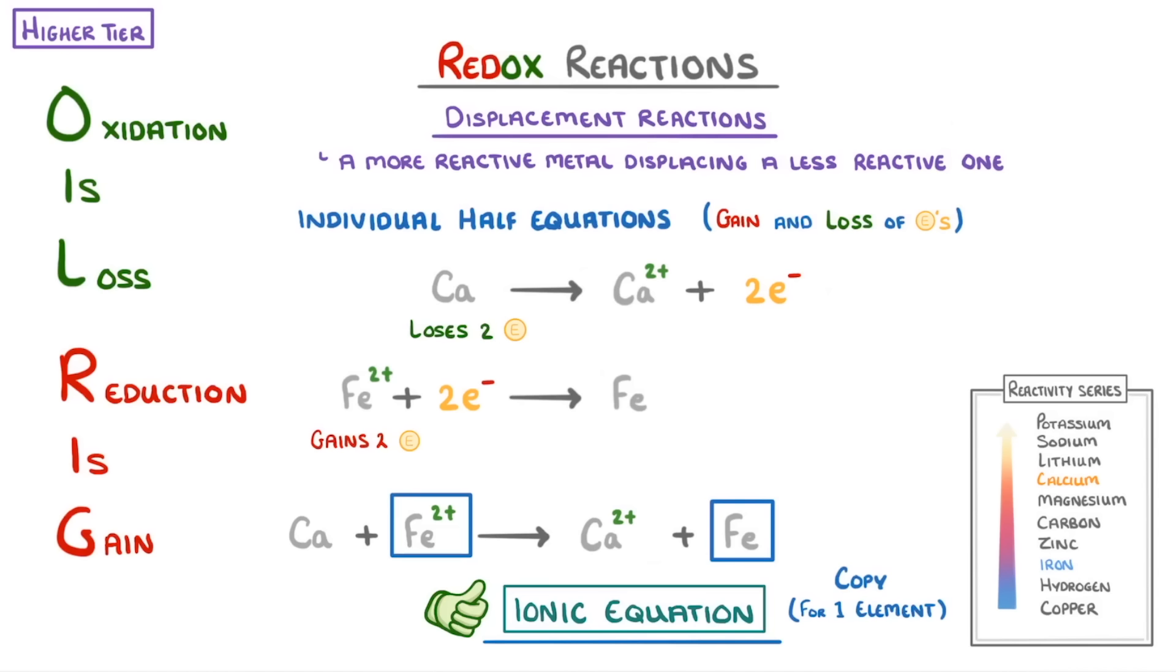Whenever you do these half equations, just check that the overall charge on each side balances. For example, in our iron half equation, we can see that on the left we have a 2+ charge and two 1- charges, which add together to make 0. And on the right, everything is neutral, so also 0. If you ever find that the overall charges on each side aren't the same, then you've probably put your electrons on the wrong side.